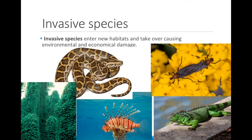Kudzu is a plant that grows like a vine. It literally grows over other plants and trees and covers them up to out-compete them for light. It grows so fast that it's growing faster than it can be cut down.